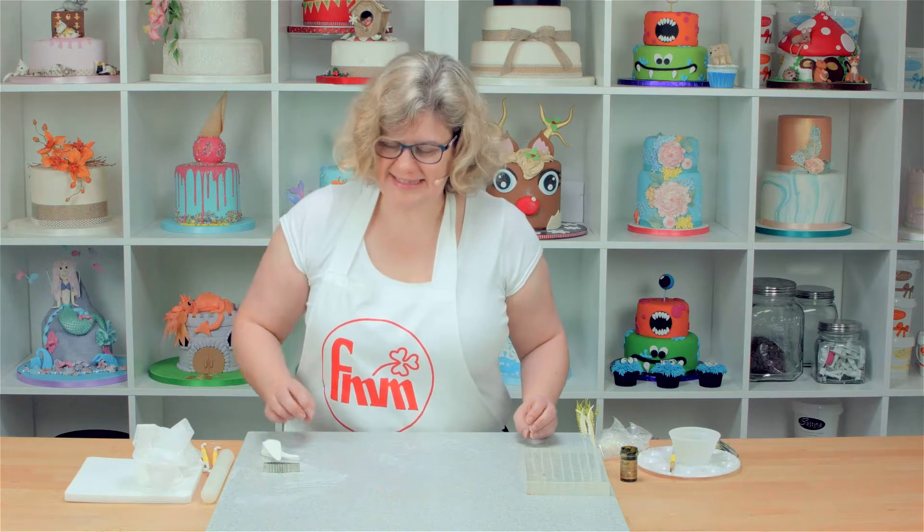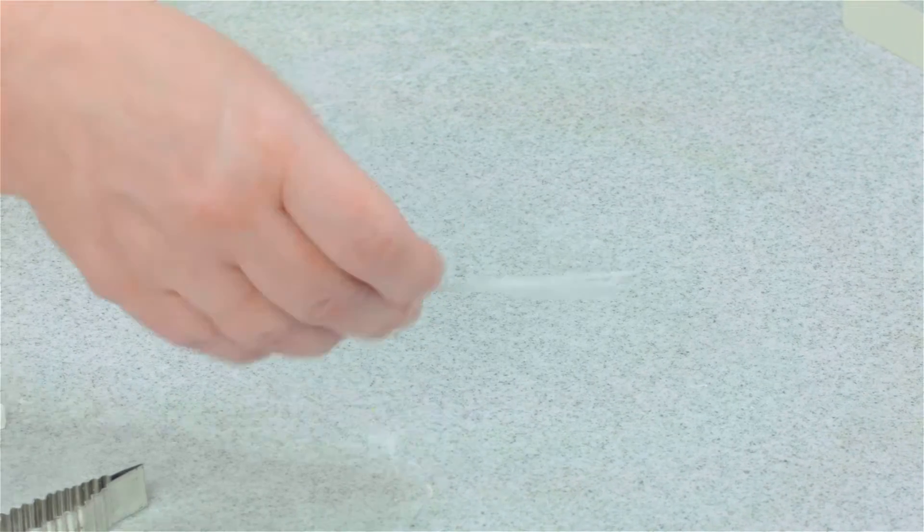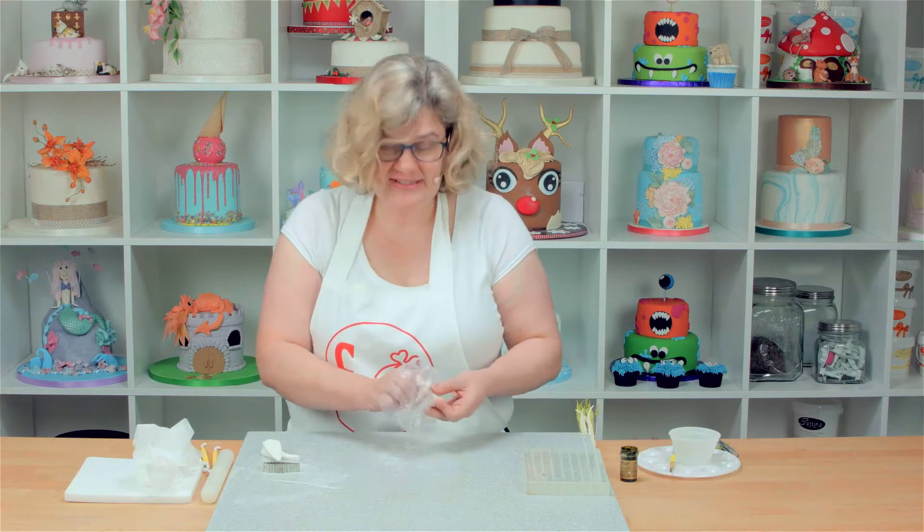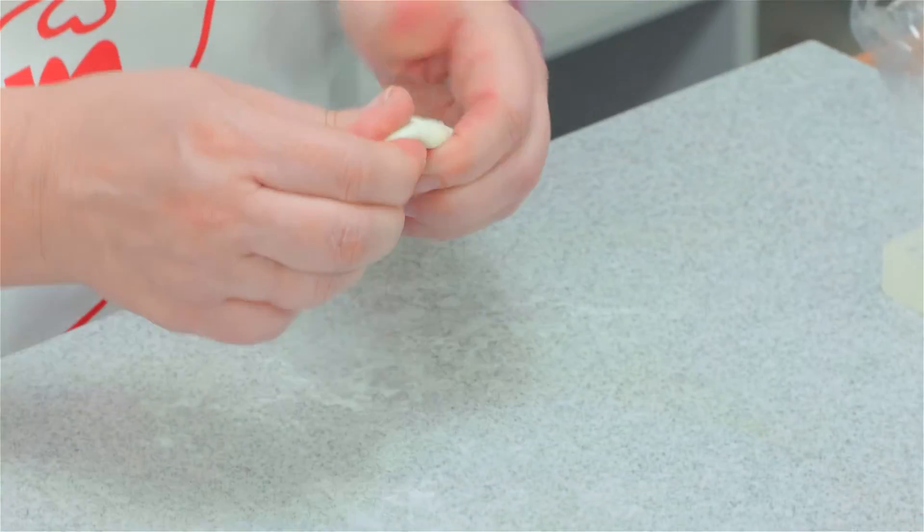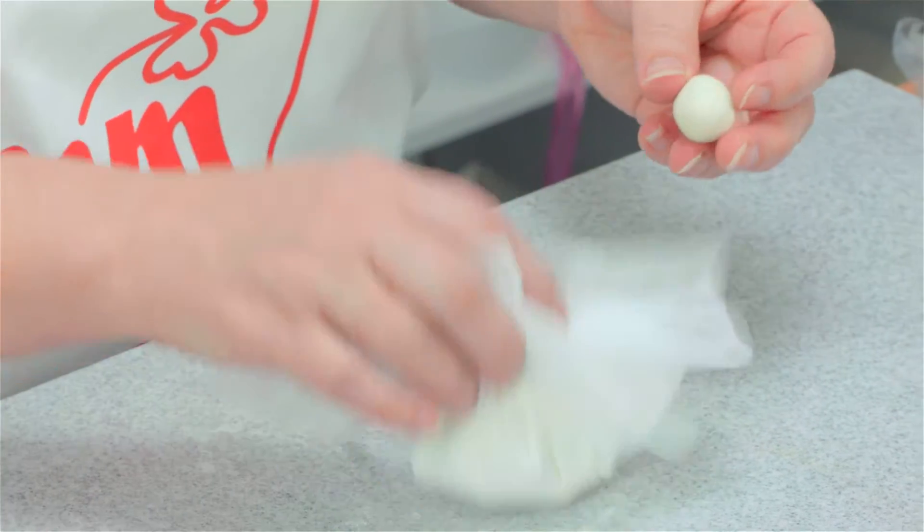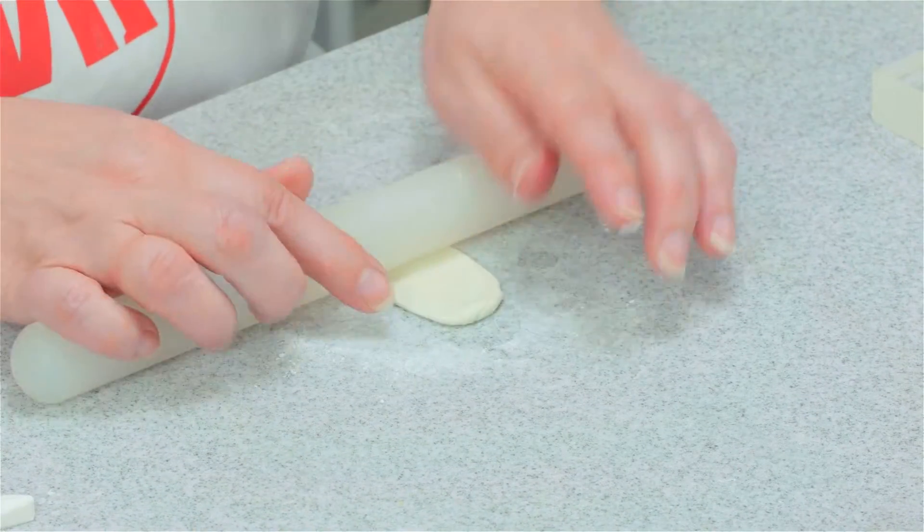The fern is made up from lots of fronds wired together onto a single stem, and each one is wired. I've got 28 gauge wires which I've cut into four, and I'm going to use some flower paste that I've colored pale green with some gooseberry green paste color. I'm going to roll out some of this.